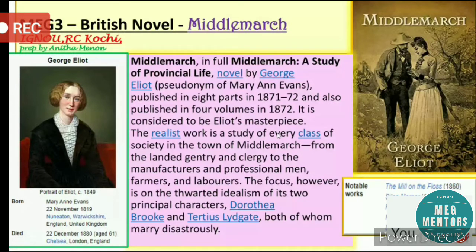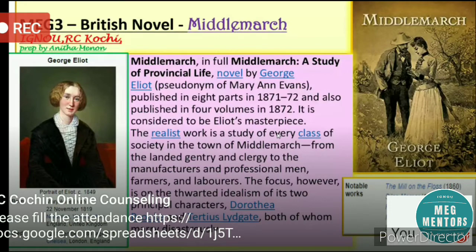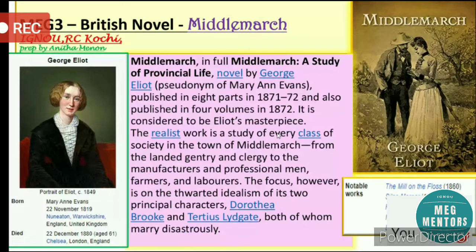The main focus, however, is on the thwarted idealism of two principal characters — Dorothea Brooke and Tertius Lydgate — both of whom marry disastrously. Both are very idealistic people, but their idealism does not remain in its perfect form. How their idealism ends disastrously is seen through the novel, especially through their marriages, which they enter with a lot of dreams.